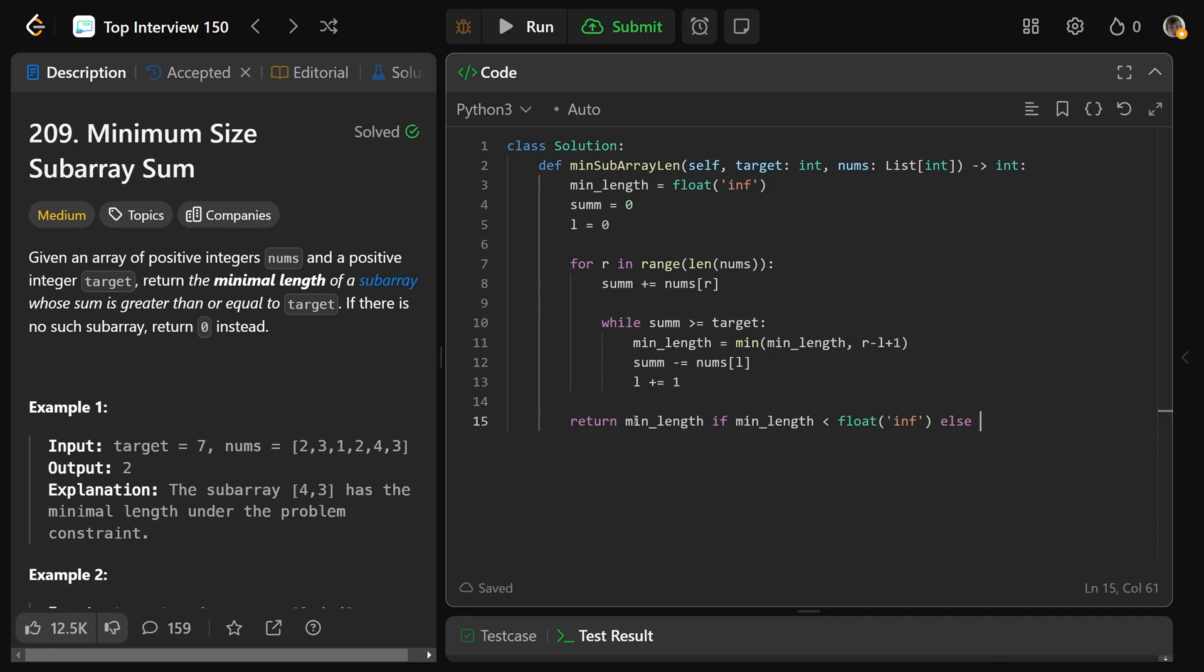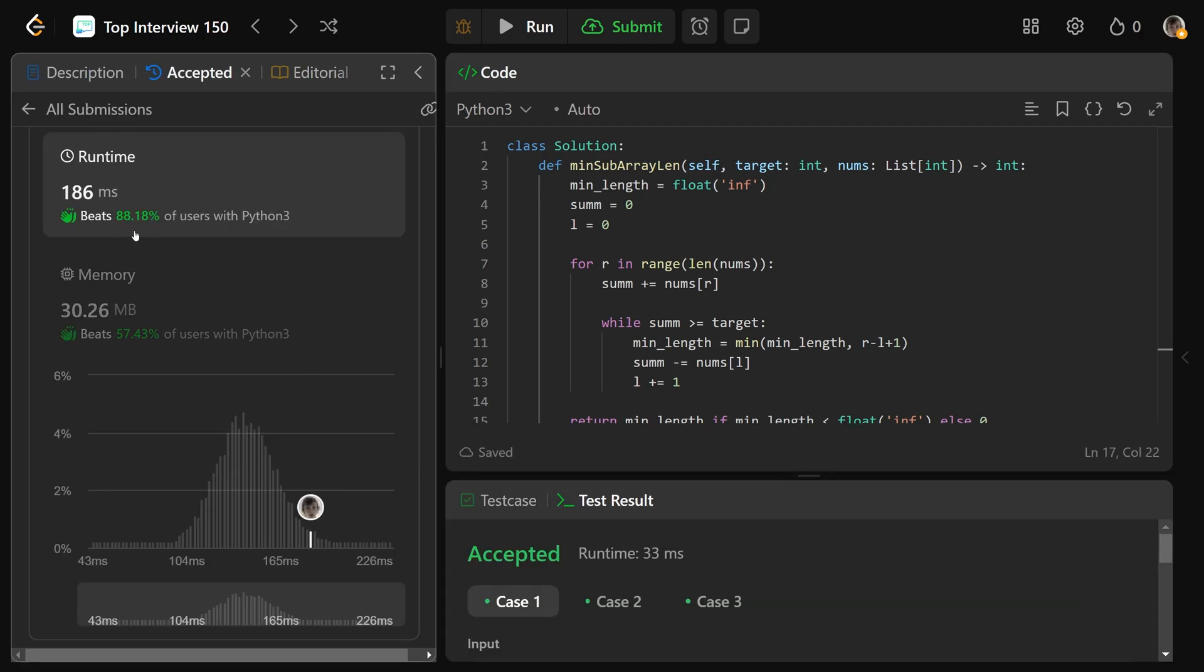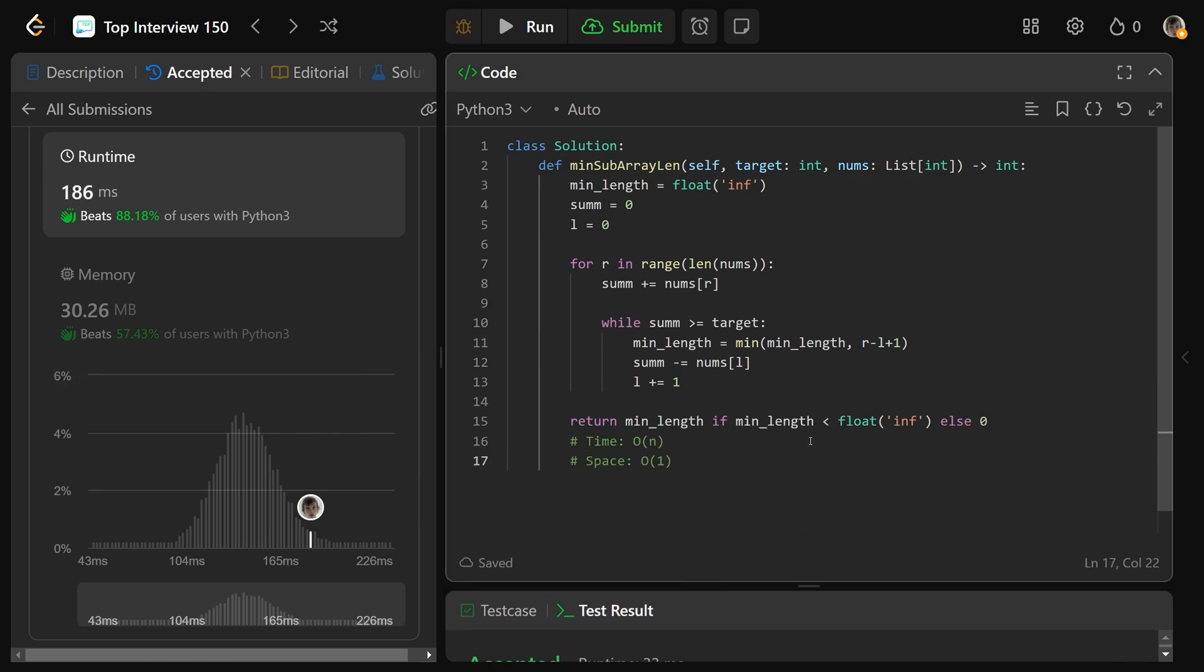So this approach is going to give us a big O of n time complexity. And it doesn't take up any space. As you can see we're not storing anything. You can see it beats 88%. That really doesn't say what the graph shows. But that's fine. Anyways, here's our code guys. Drop a like if this was helpful. I hope it was. And have a great day. Bye bye.